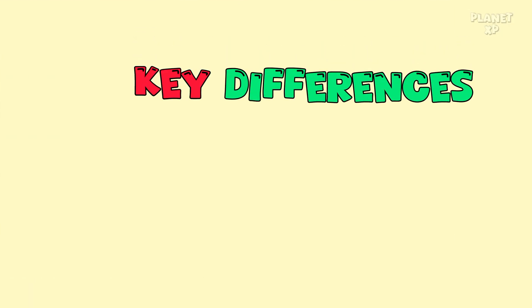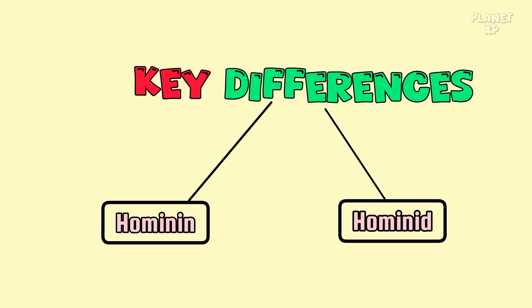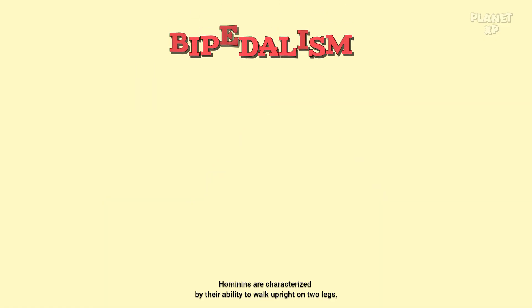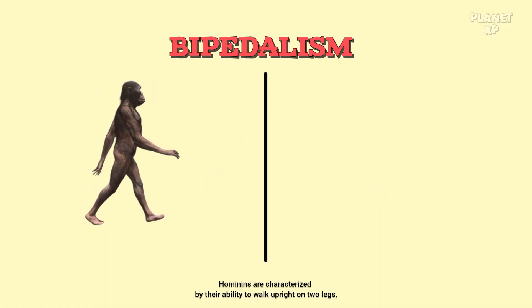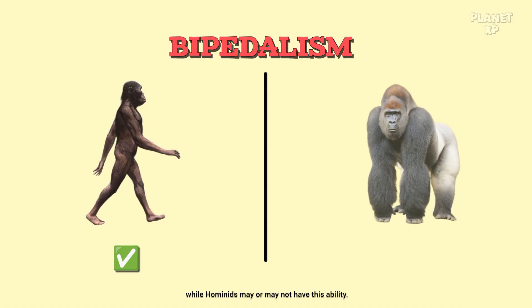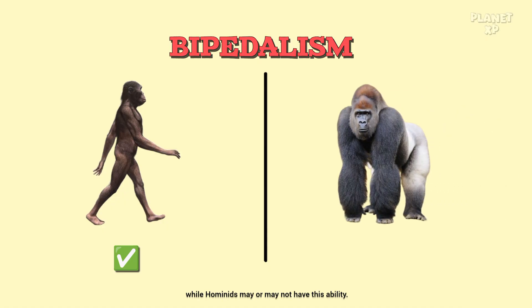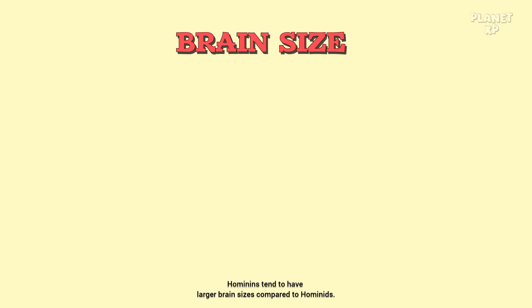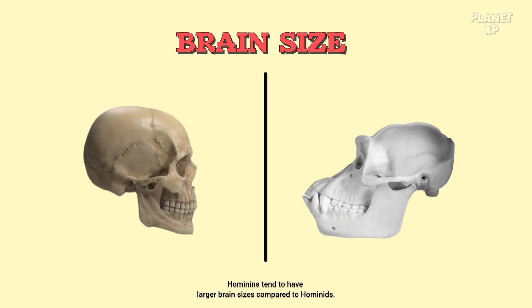So, what are the key differences between these two? First, bipedalism: hominins are characterized by their ability to walk upright on two legs, while hominids may or may not have this ability. Second, brain size: hominins tend to have larger brain sizes compared to hominids.